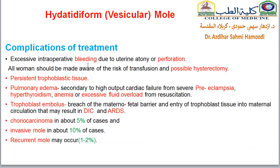The complications of treatment must be mentioned to the patient during counseling before the operation. These include: intraoperative bleeding — and if this is out of control, there will be a possibility of hysterectomy; perforation of the uterus; persistent trophoblastic tissue; pulmonary edema due to high output cardiac failure from preeclampsia, hyperthyroidism, anemia, or fluid overload; trophoblast embolus; DIC; and acute respiratory distress syndrome. Additional risks include choriocarcinoma in 5% of cases, invasive mole in 10% of cases, and recurrence of mole in up to 2% of cases — that is, in the next pregnancy.